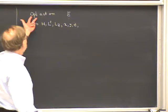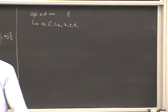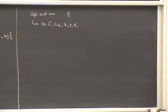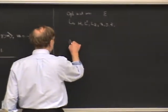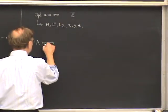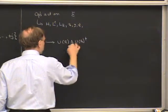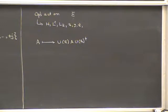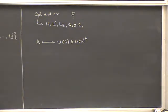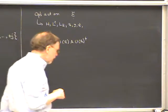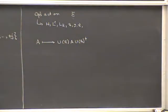The space of operators forms a vector space — if you form linear combinations of operators, you get a new operator. Moreover, it's a space that rotations act on. If A is an operator, if you rotate it, it goes into U(R) times A times U(R)-dagger. This is the definition of the rotated operator. So the space of operators can be broken up into invariant irreducible subspaces, and those subspaces of operators are called irreducible tensor operators — one of the main objects I want to talk about today.